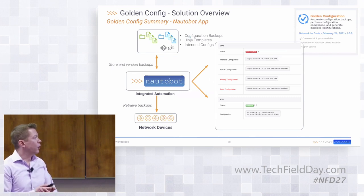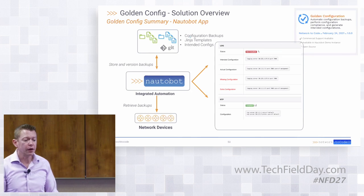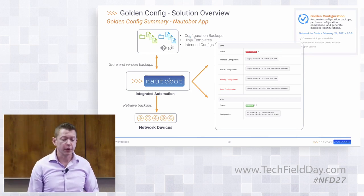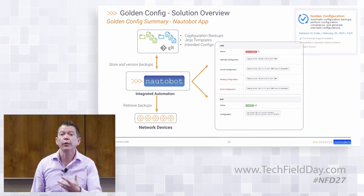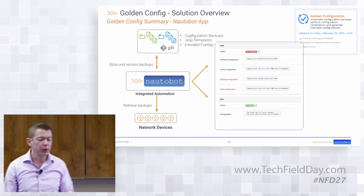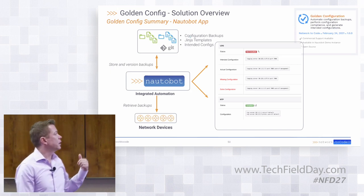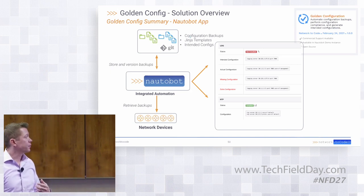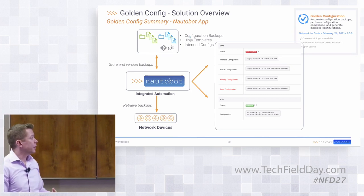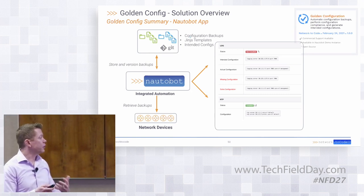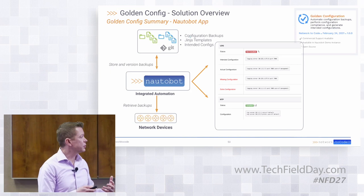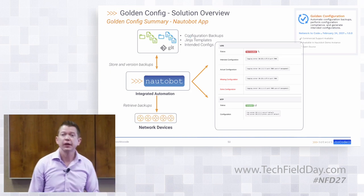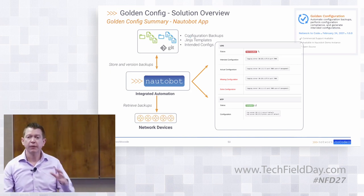Looking at an overall solution overview and the common components in typical environments: using the Nautobot application, we start with configuration backups as the way to get our actual state, Jinja templates providing our intended state, and from there we use that integration with Nautobot to combine these components and produce the report in the Golden Configuration app.